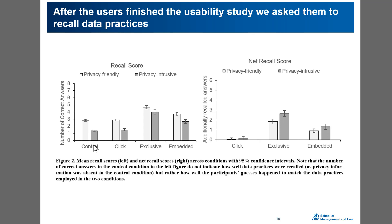Participants in the control condition just guessed the correct answers. As you can see, in the click condition the score is not very different from the control condition where no privacy information was present. This can be explained by only 16 participants actually clicking on the policy link. The score in the exclusive and embedded conditions is better. To better understand these two conditions, we calculated the net recall score, taking the guessing effect into account.